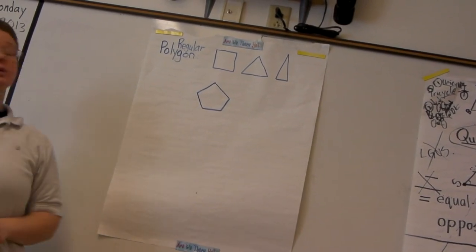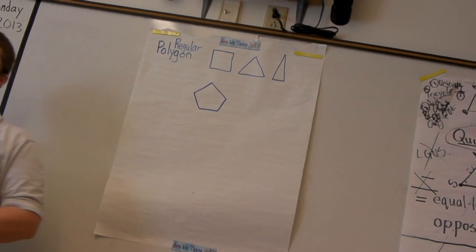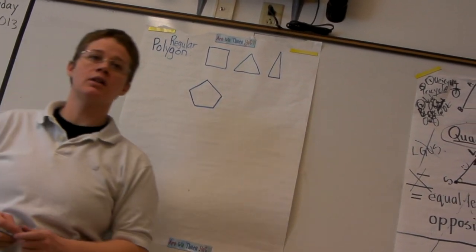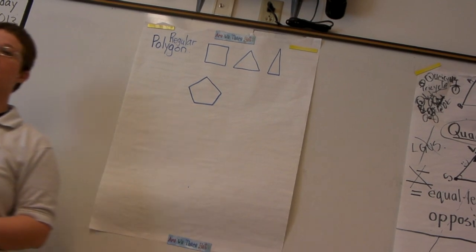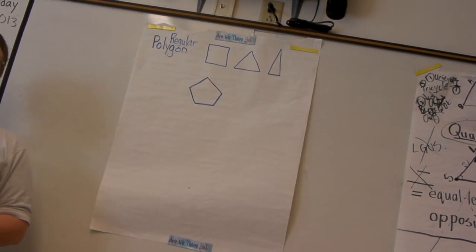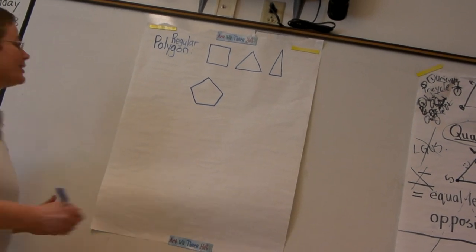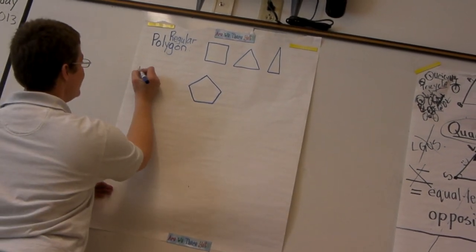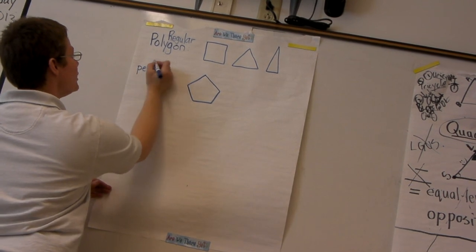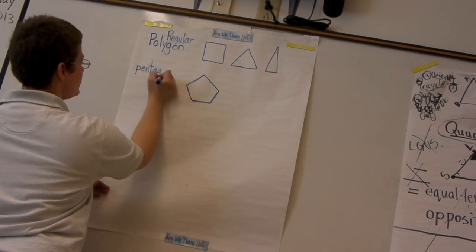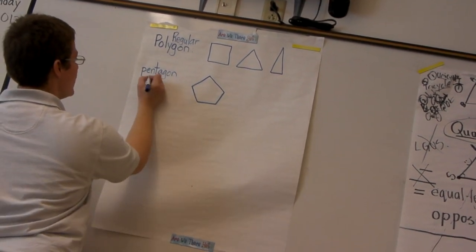But what's the name of this shape? Does anyone know? Show me in sign language what it begins with. It should be beginning with a P, because this shape is called a pentagon. Pentagon, it has five sides.